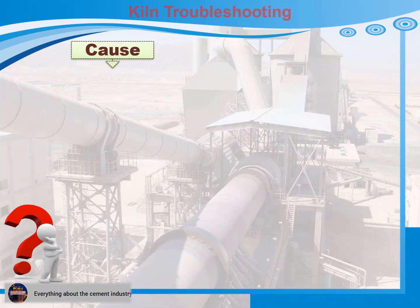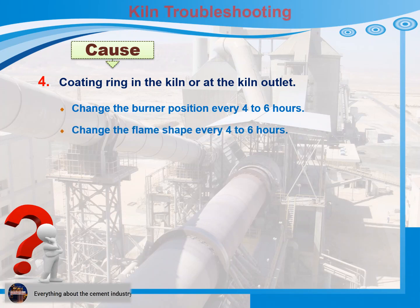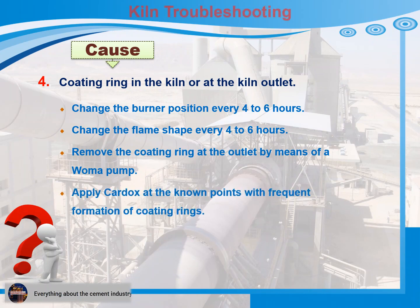Cause 4: Coating ring in the kiln or at the kiln outlet. Recommendations for action: 1) Change the burner position every 4 to 6 hours. 2) Change the flame shape every 4 to 6 hours. 3) Remove the coating ring at the outlet by means of a water pump. 4) Apply cardox at the known points with frequent formation of coating rings. 5) Use Remington air blaster.